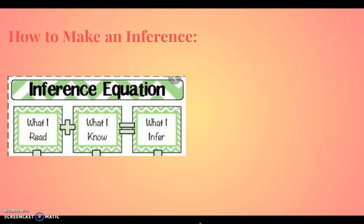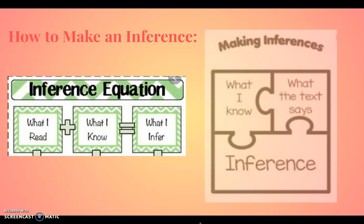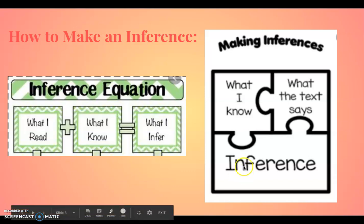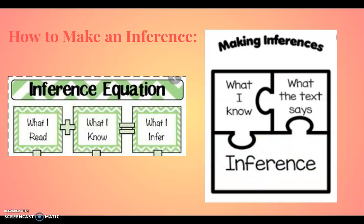This is an equation that will help us make an inference. We add what we read to what we know — our own personal experiences and background knowledge — to make an inference. This looks similar to some math problems that we do, where we add the two on the top to equal the bottom. We are adding what we know and what the text says to equal an inference or a conclusion about the text.